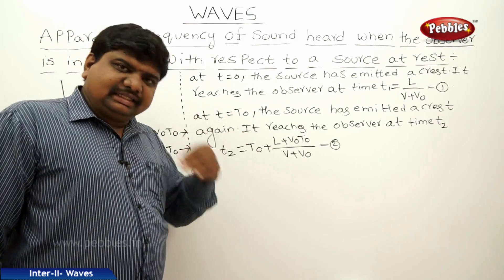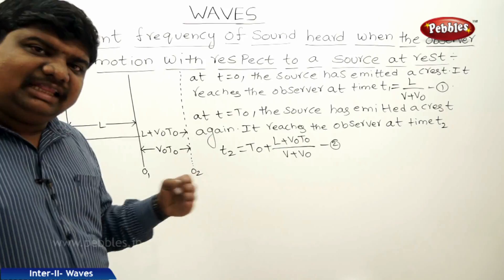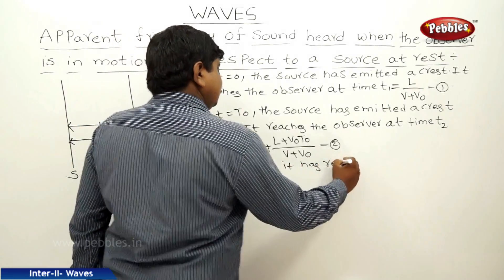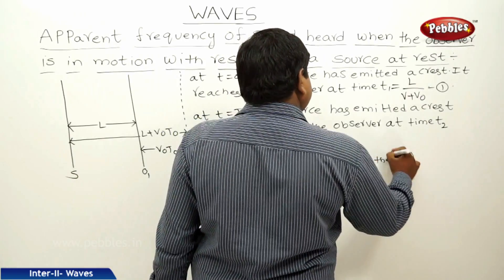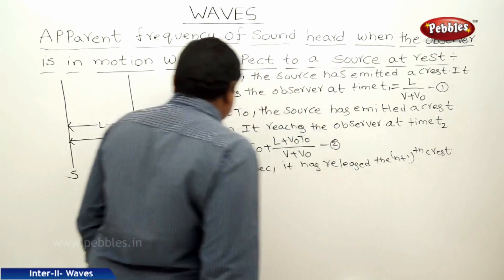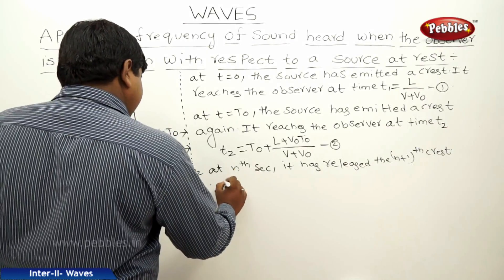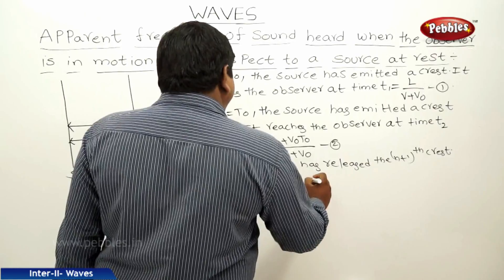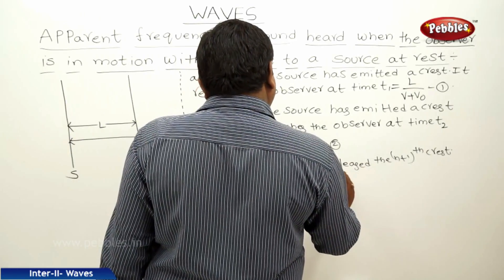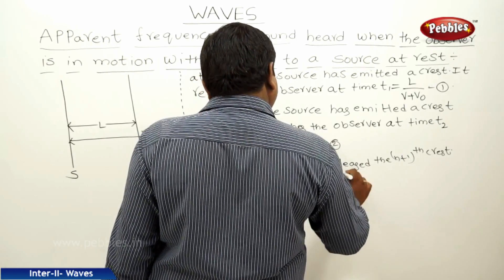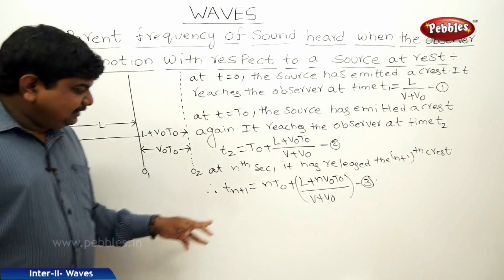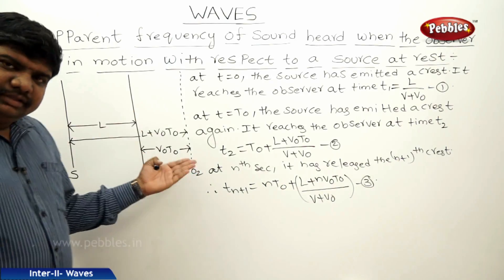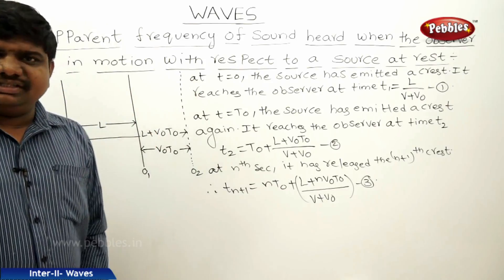At t = n·T0 seconds, the source has released the (n+1)th crest. Therefore, Tn+1 = n·T0 + (L + n·V0·T0) / (V + V0). This is equation 3. The time difference between the (n+1)th crest and the first crest, divided by N, gives the time period. Then the reciprocal of the time period gives the apparent frequency.